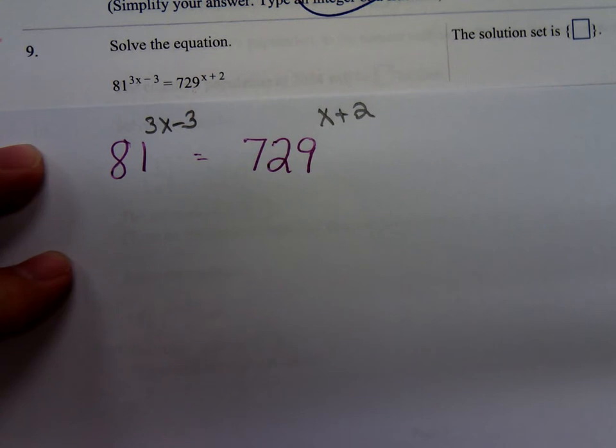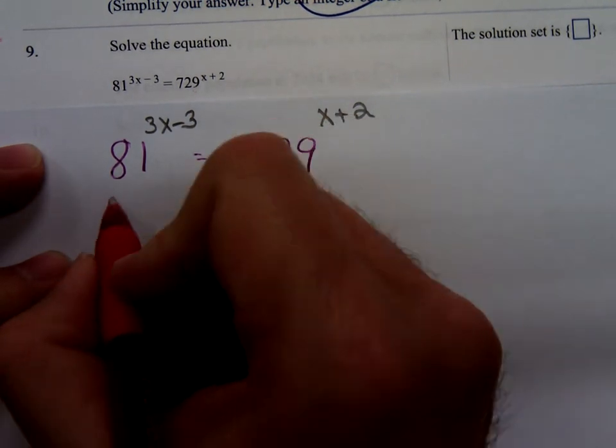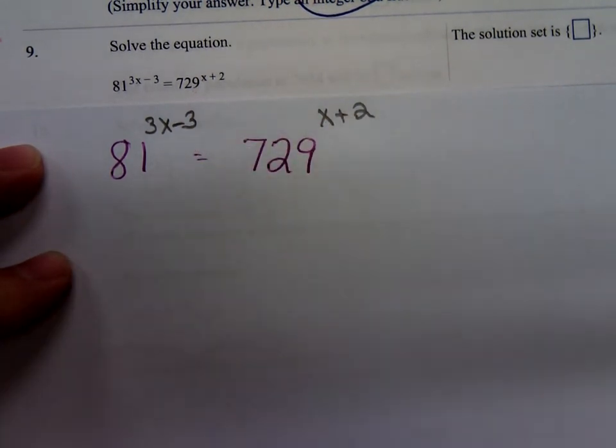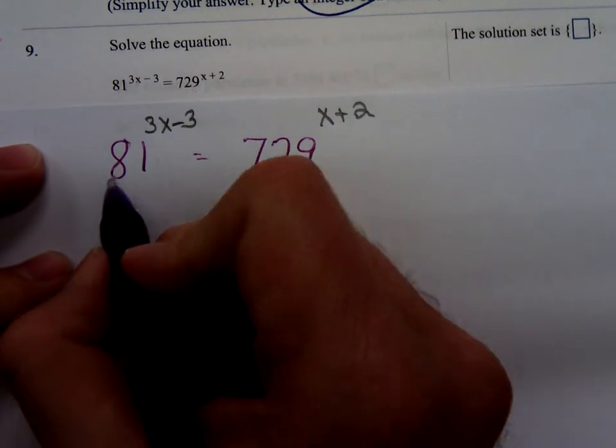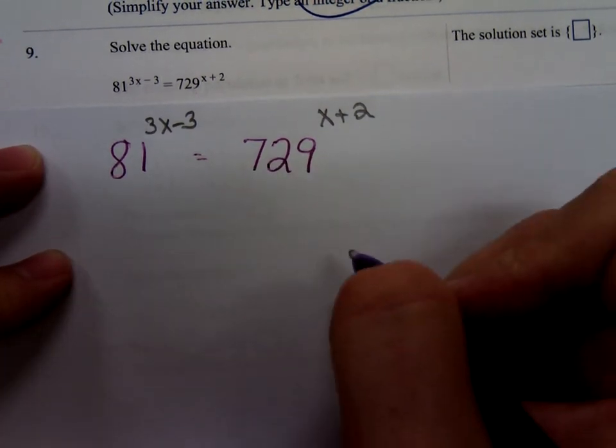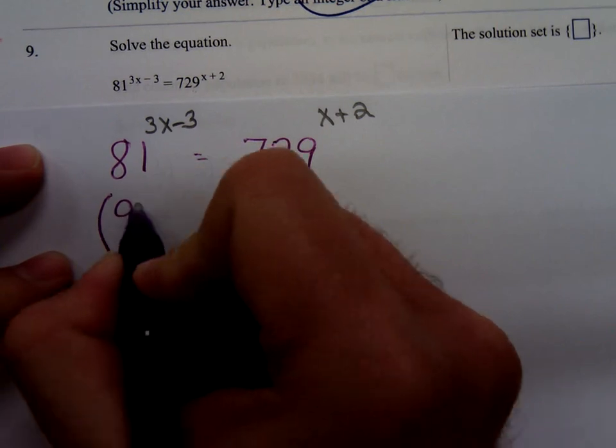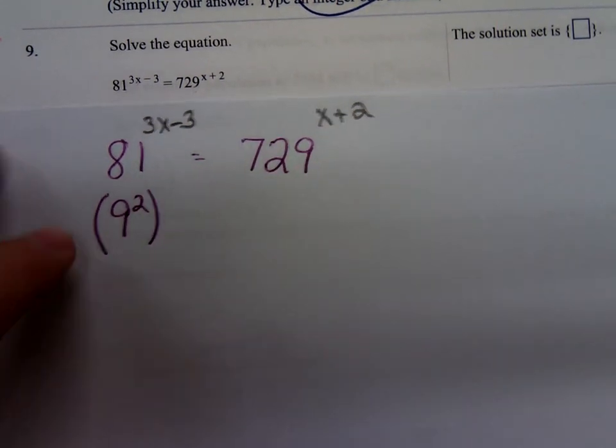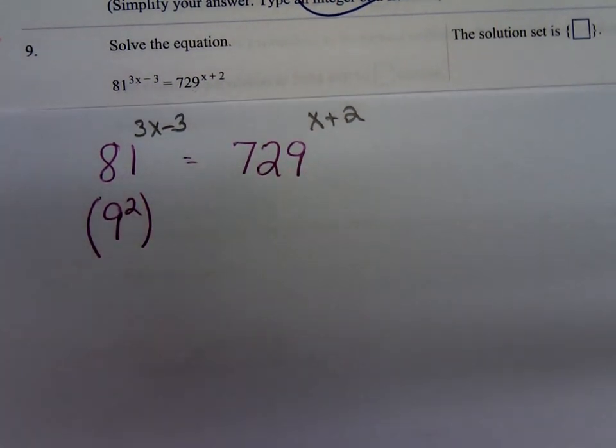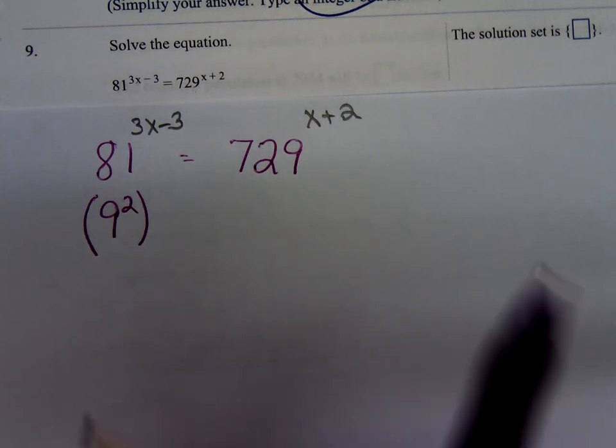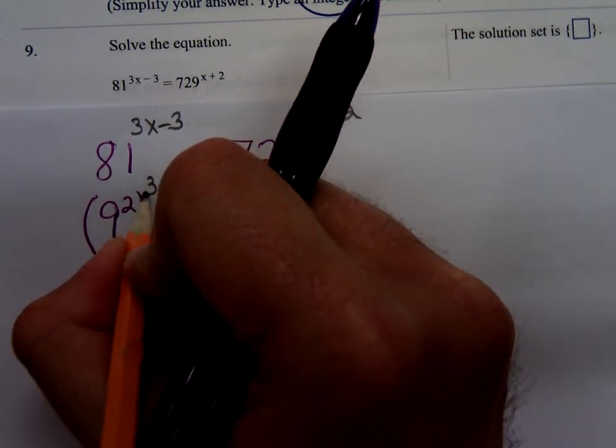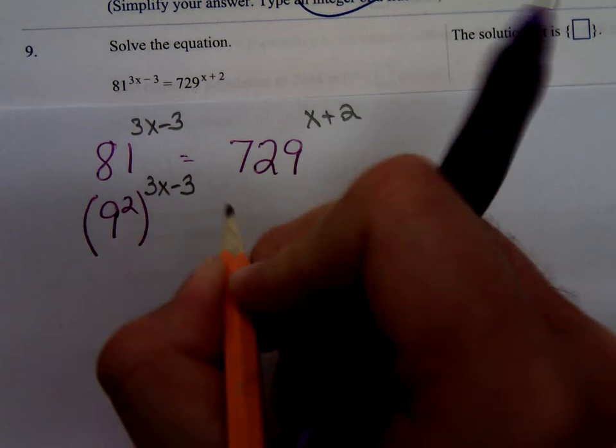If we look at 81, I bet all of you just from your multiplication table could tell me a way to rewrite 81 as some number to a power. Yeah, that's right. 9 squared would give you the 81. So, we have 9 squared to the 3x minus 3.